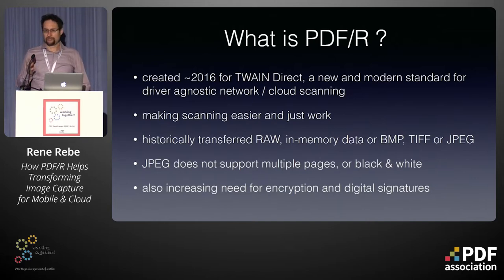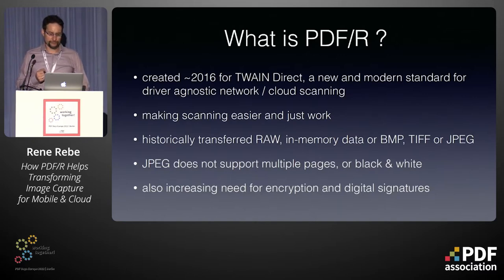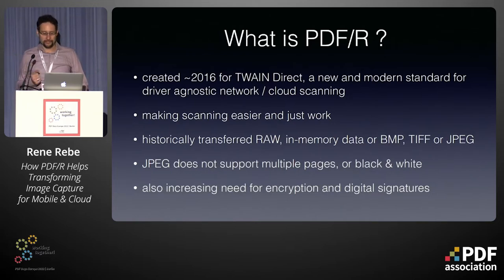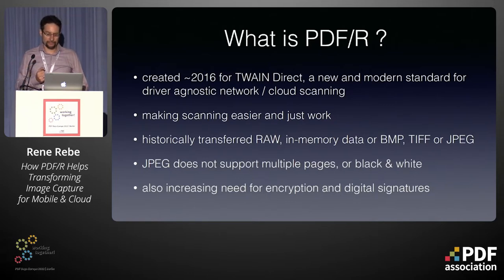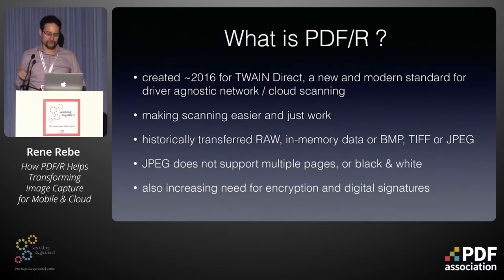Historically, raw image data was transferred even with TWAIN drivers on Windows, Macintosh, or Linux — using memory pointers and similar constructs. Obviously, pointers and raw memory don't translate well to cloud computing. So we reconsidered whether to transfer images as BMP, TIFF, or JPEG, but all of those had major drawbacks.